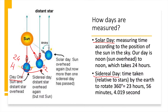We measure time in a way that is convenient for us. Solar day is measuring time according to the position of the Sun in the sky. Our day is defined as noon — Sun overhead — to noon the next day, which takes 24 hours. That is called the solar day.